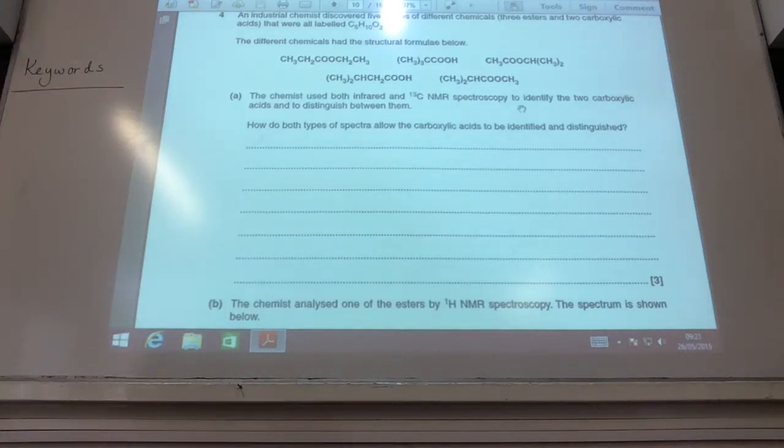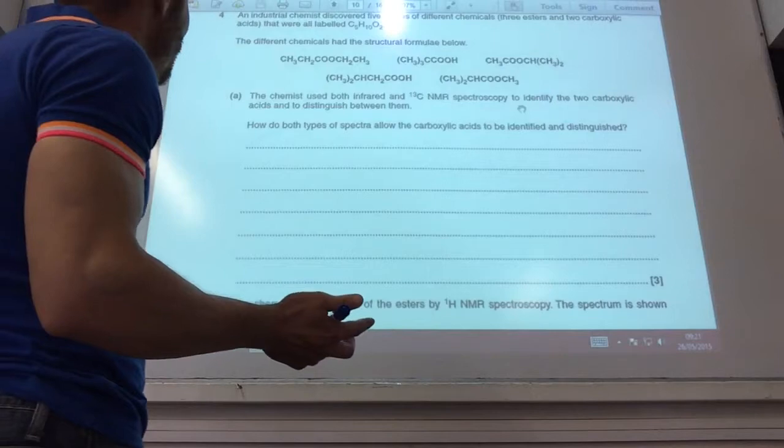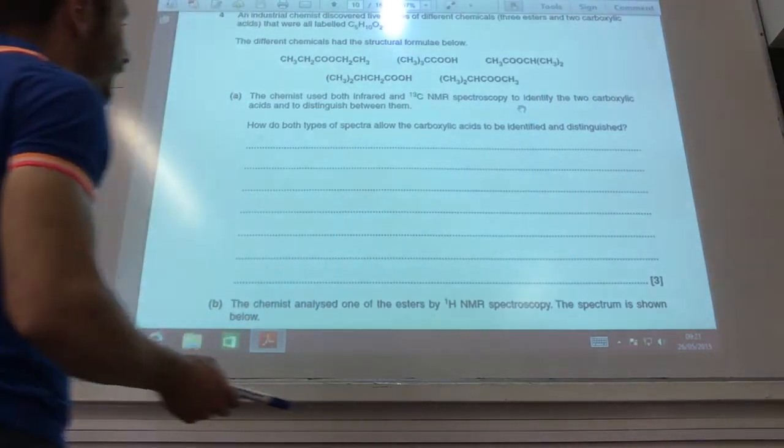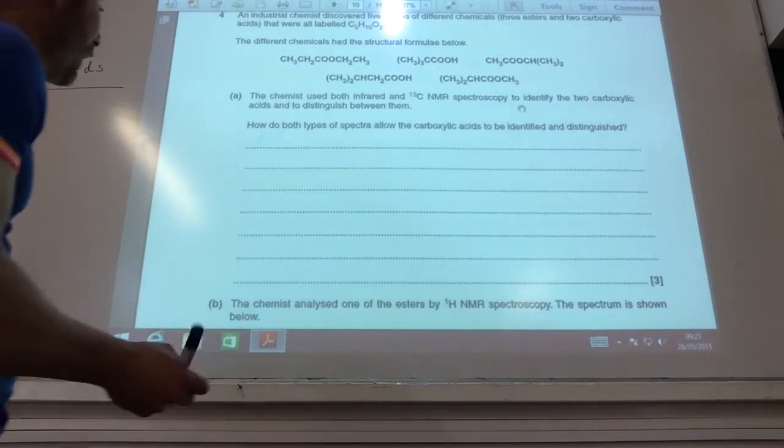Alright, so I've got five bottles now, all got C5H10O2 on, could be any of those five there, they can be the structure, used infrared and carbon-13 NMR. I just had the two carboxylic acids. So, how does it work?